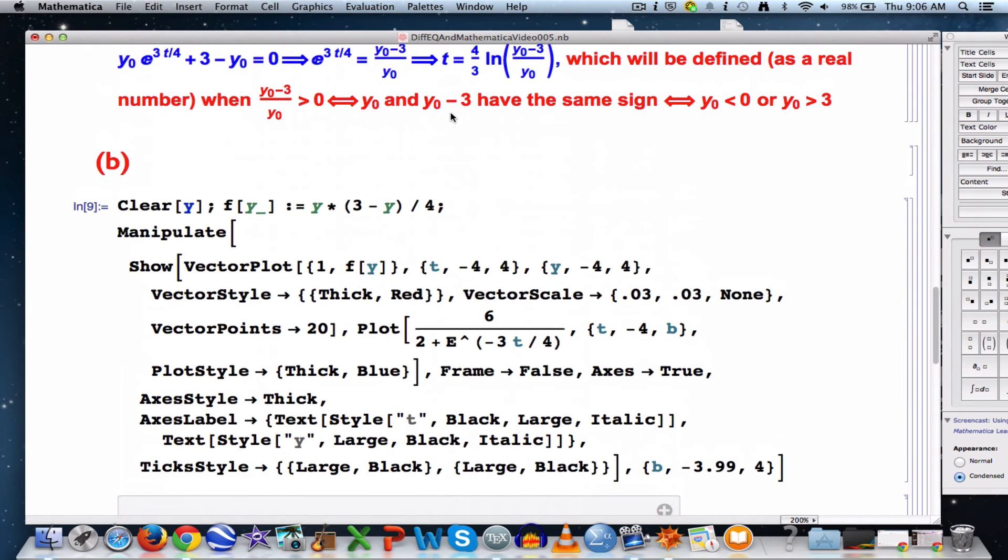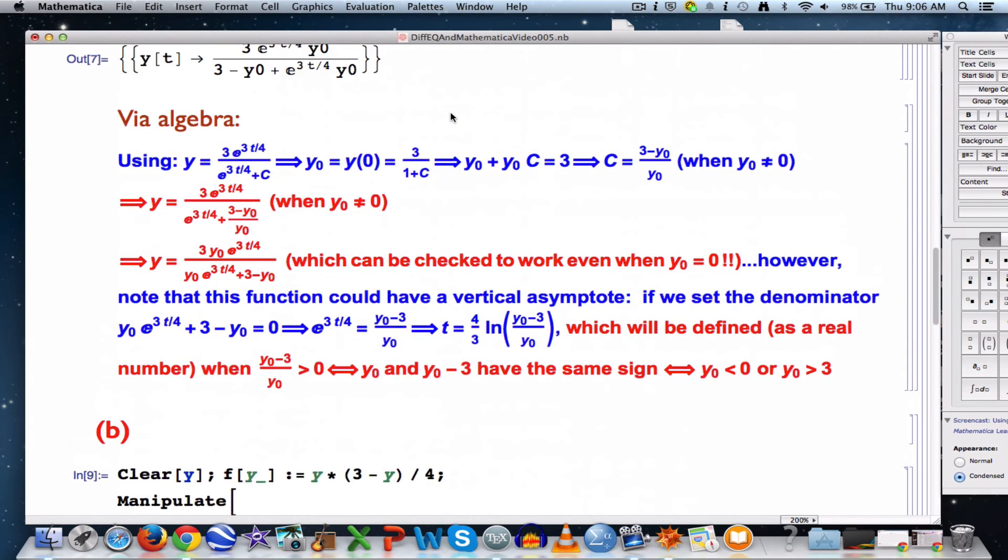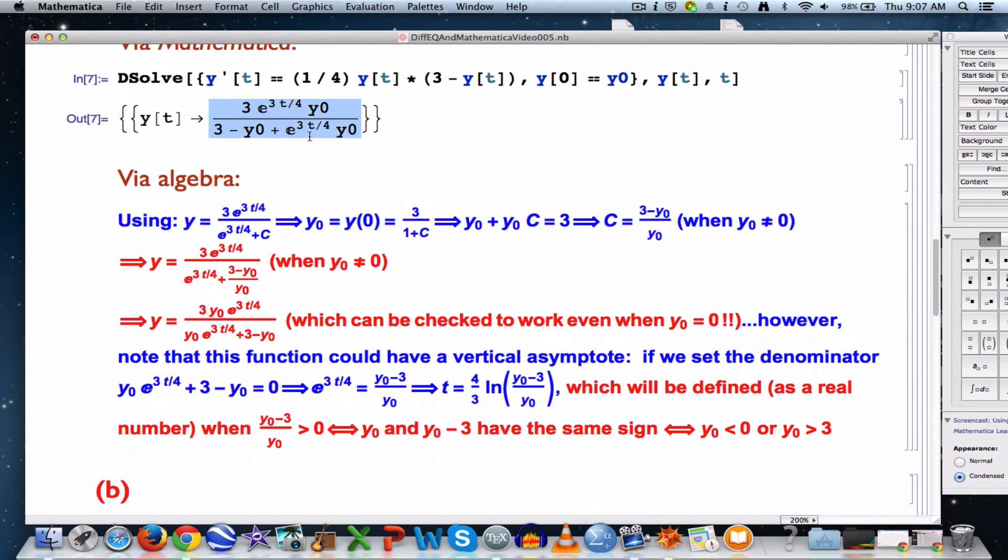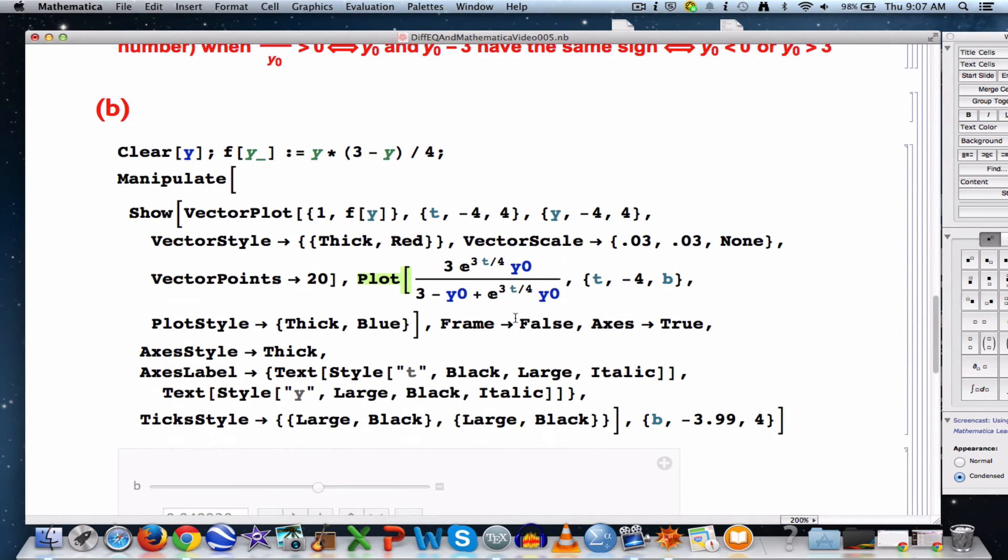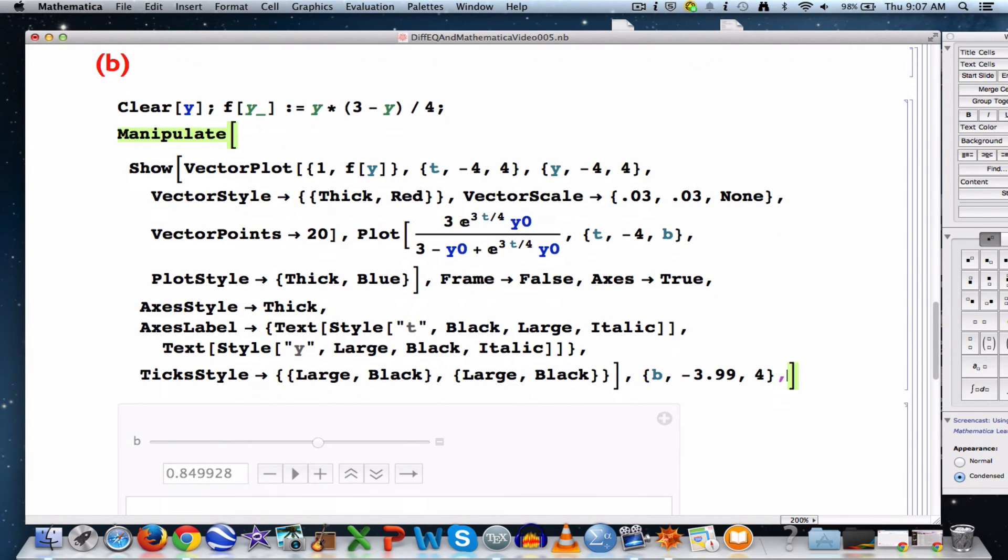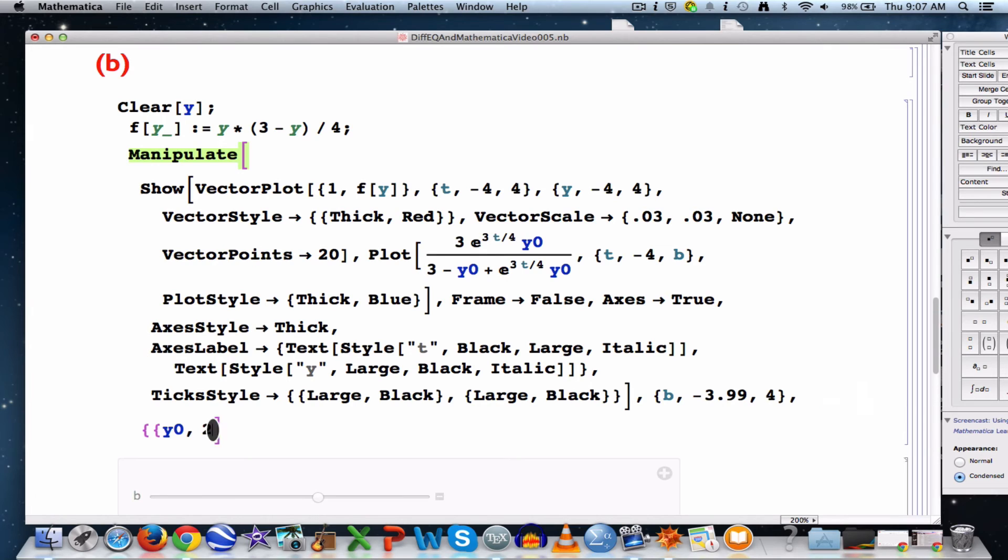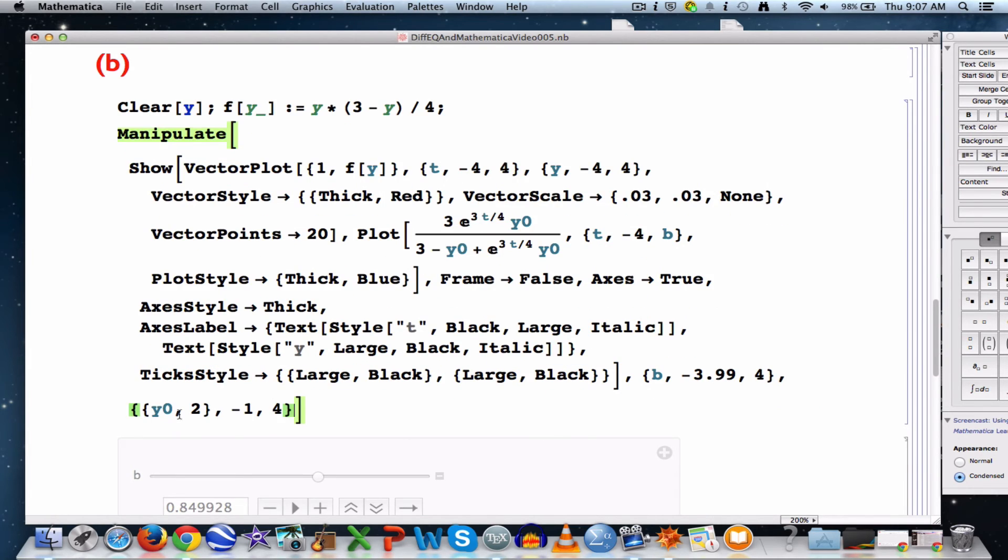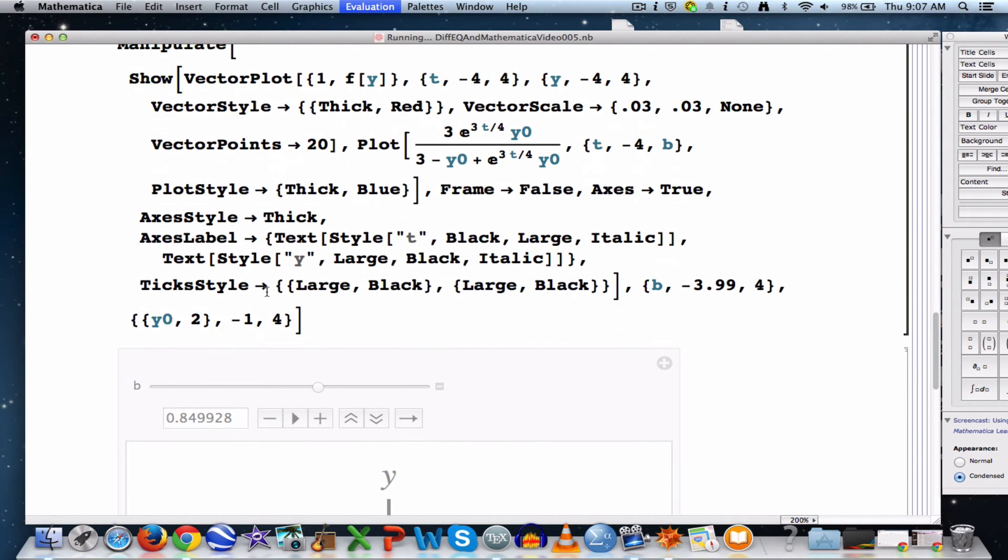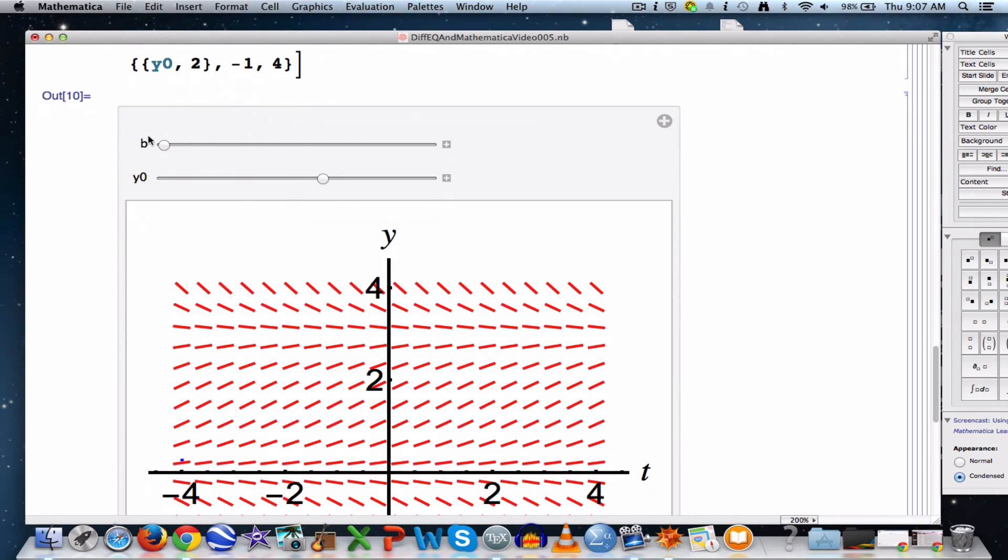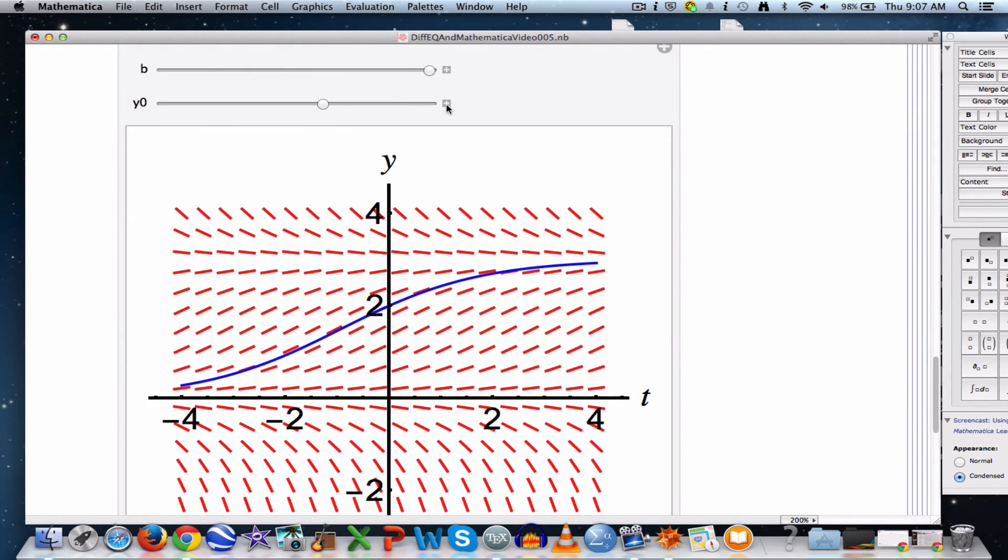But now I want to allow myself to change y0 as well. So I'm going to copy and paste the solution down here. y0 now is going to be another animation parameter. Here's syntax that will start the value of y0 at 2, let it go down to negative 1 and up to 4. That starts y0 at 2. Let's let b go up to 4 so we see the whole graph.